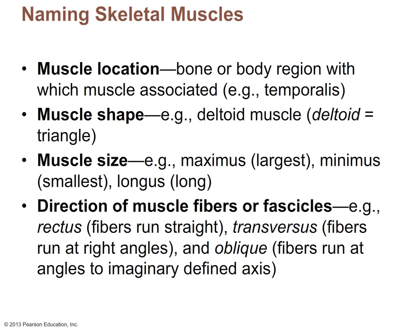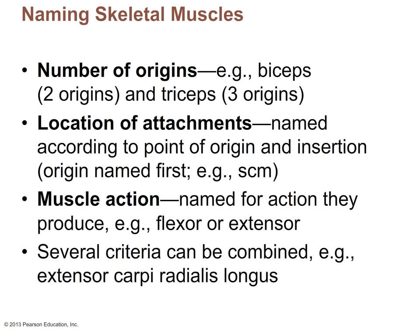We can also name muscles based on their number of origins. For example, the biceps brachii has two origins, which is why it's called biceps — two heads. Muscles can also be named by their location of attachments. For example, the sternocleidomastoid attaches to the sternum, clavicles, and mastoid — so if you know the name, you already know the origins and insertions. Finally, some muscles are named for their action: flexor muscles flex and extensor muscles extend, and we tend to find those on both the hands and feet.